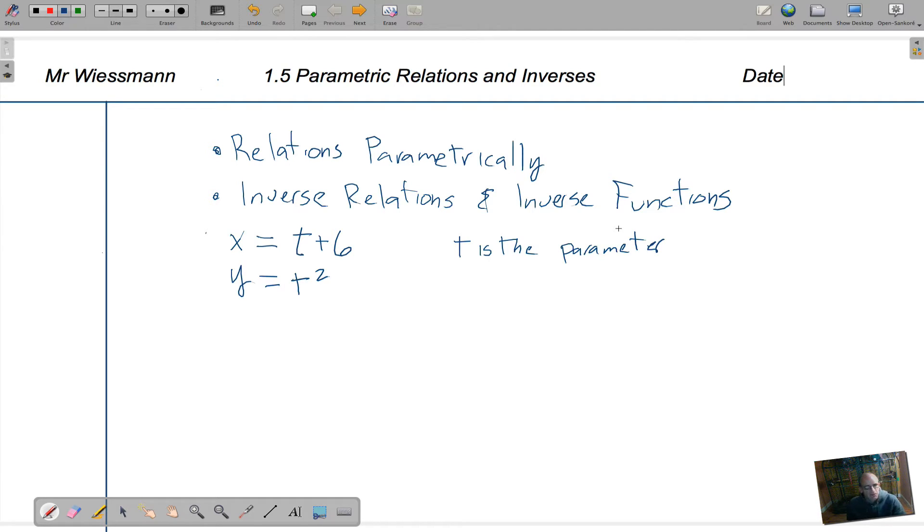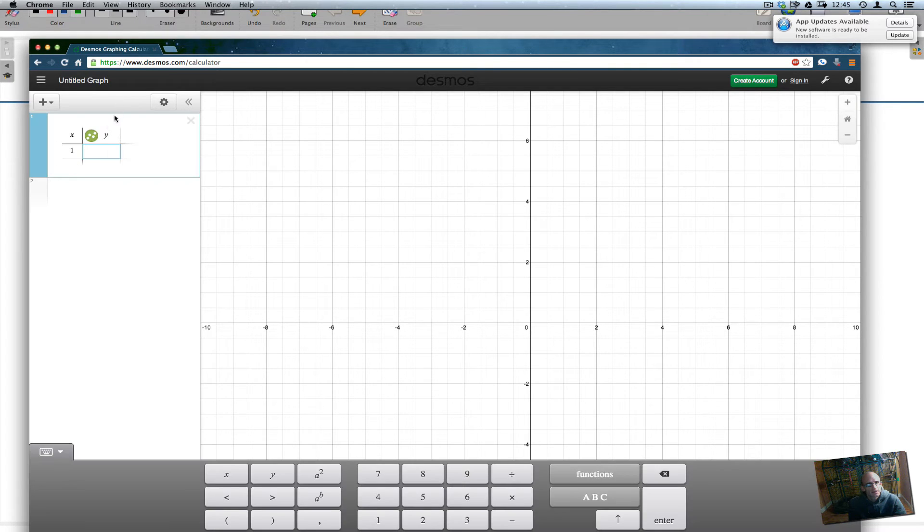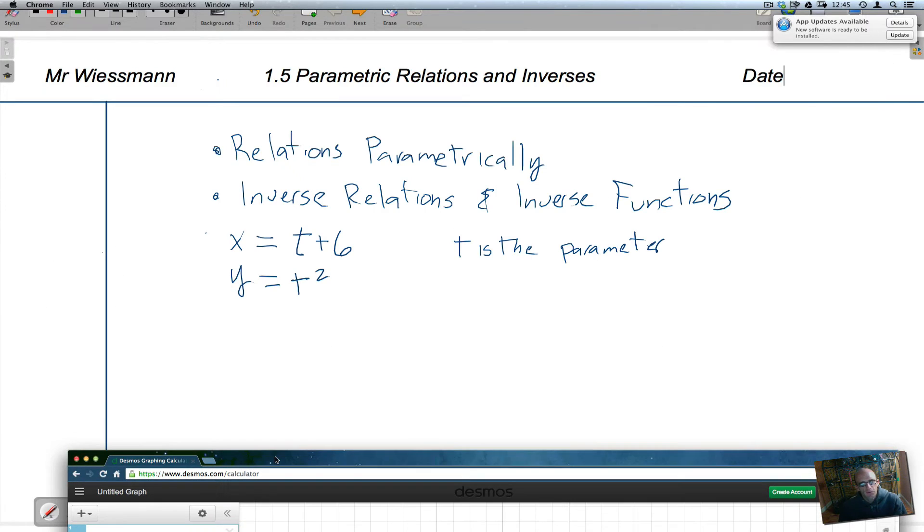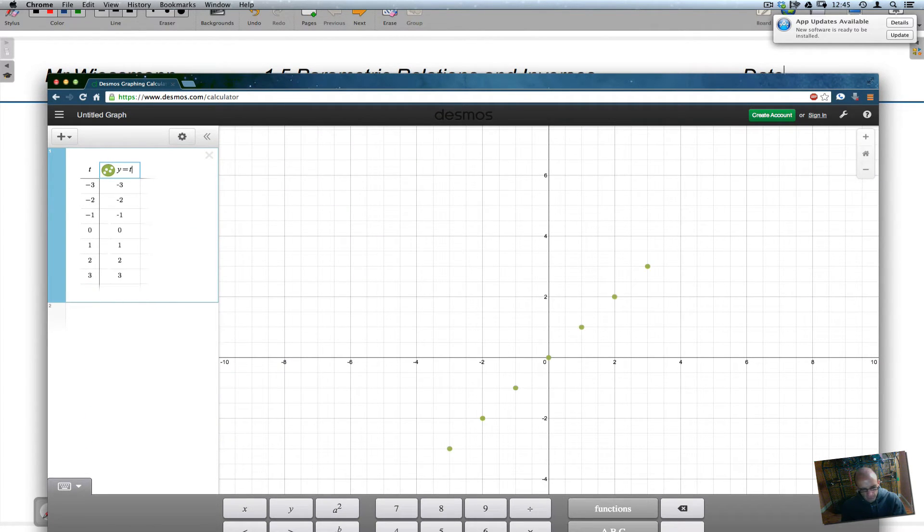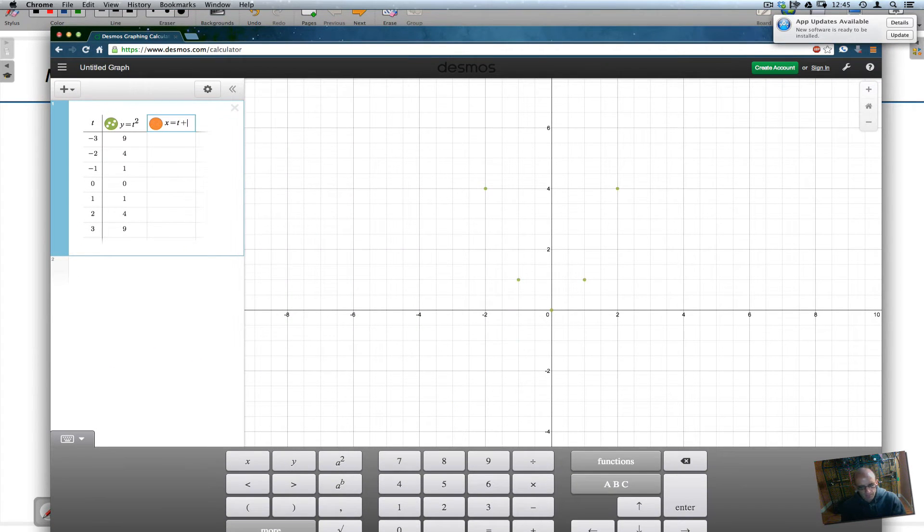Now we can look at these and we can actually put these in a table and get a relation between x and y. That's the first thing we're going to want to do here. So we get our table and let's put a t here. Let's just do a small set of numbers and then we will set y equal to t squared and x equal to t plus 6. And let's put this in order.